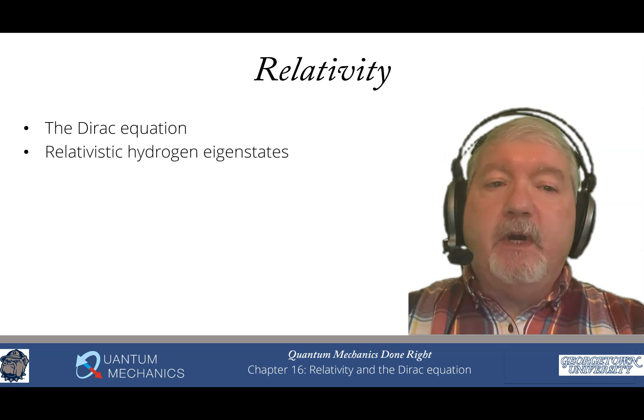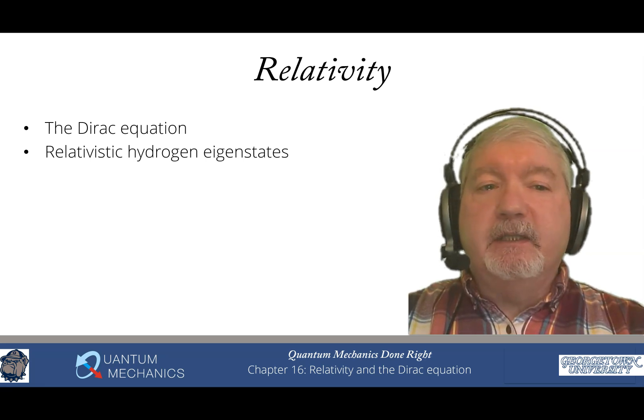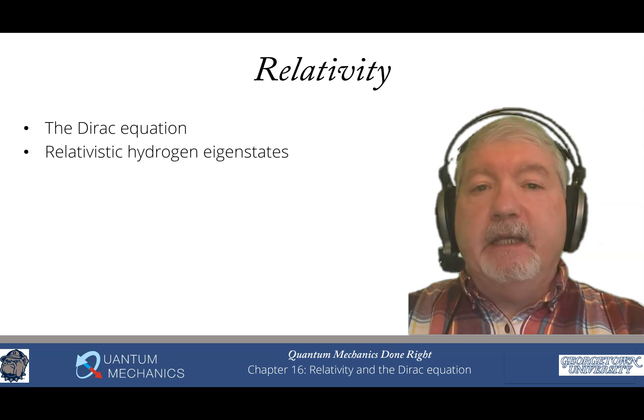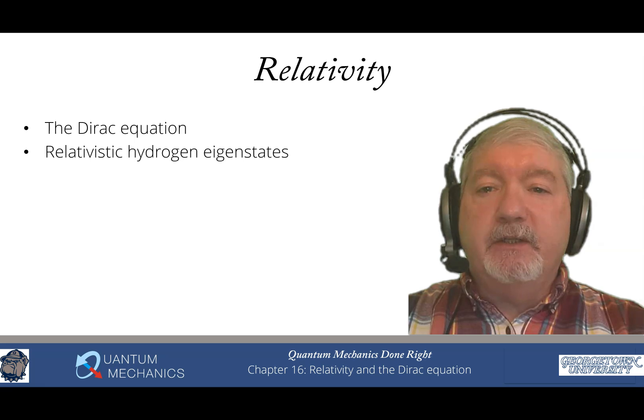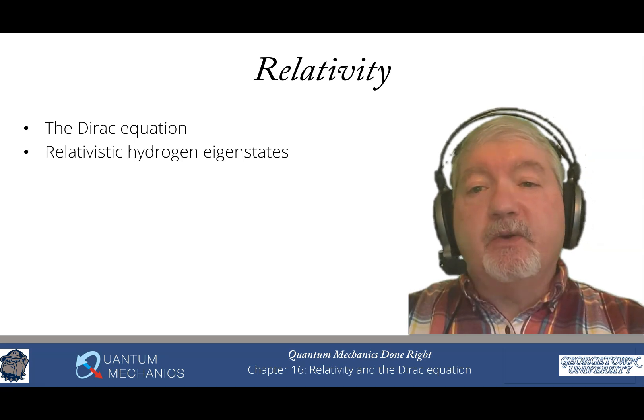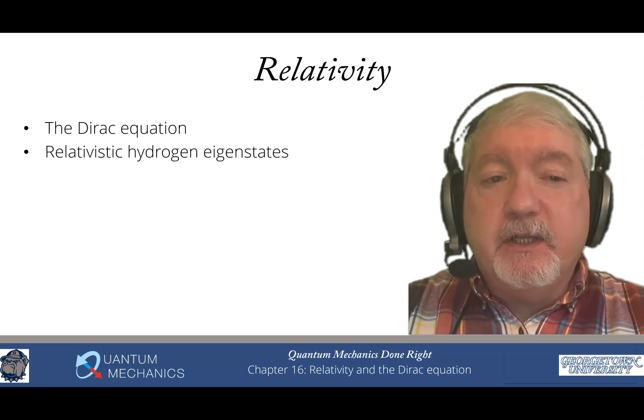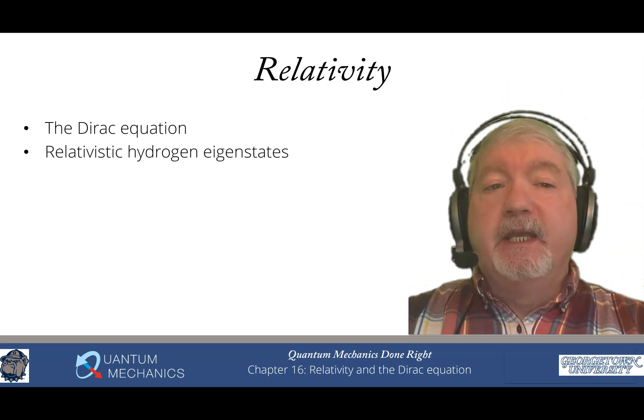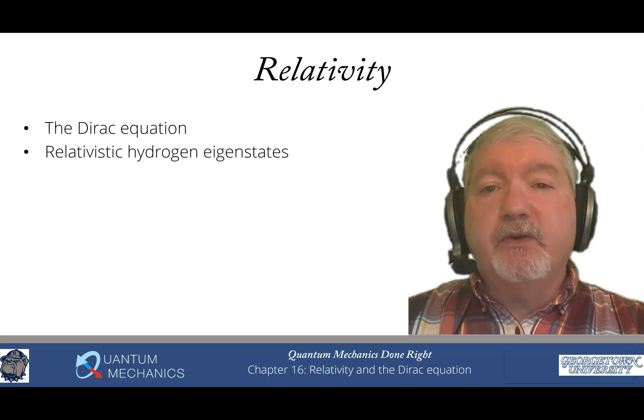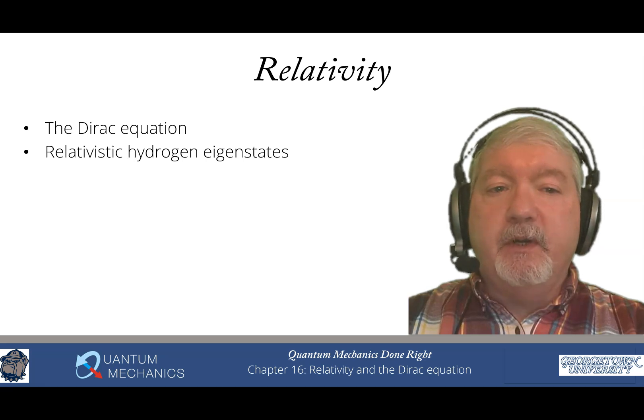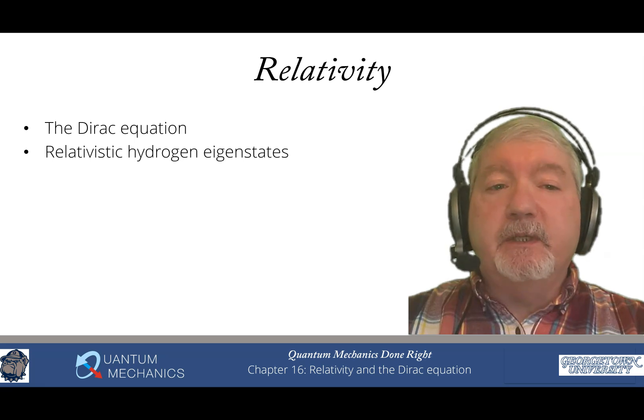Once we have that, we then want to find the relativistic hydrogen eigenstates. Because the Dirac equation is linear in momentum and energy, it doesn't exactly look like the kinds of equations we've been solving. There's a way of essentially squaring the Dirac equation that allows us to convert it into something that looks like the Schrodinger equations we've solved before. Then we can use our factorization method to solve them in a very similar way.